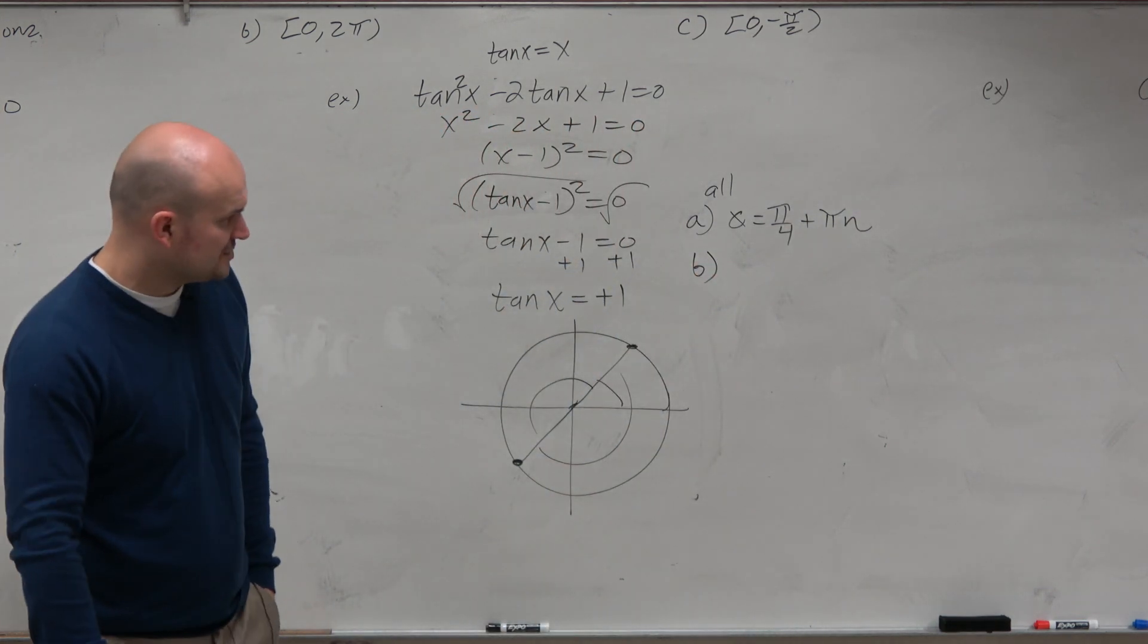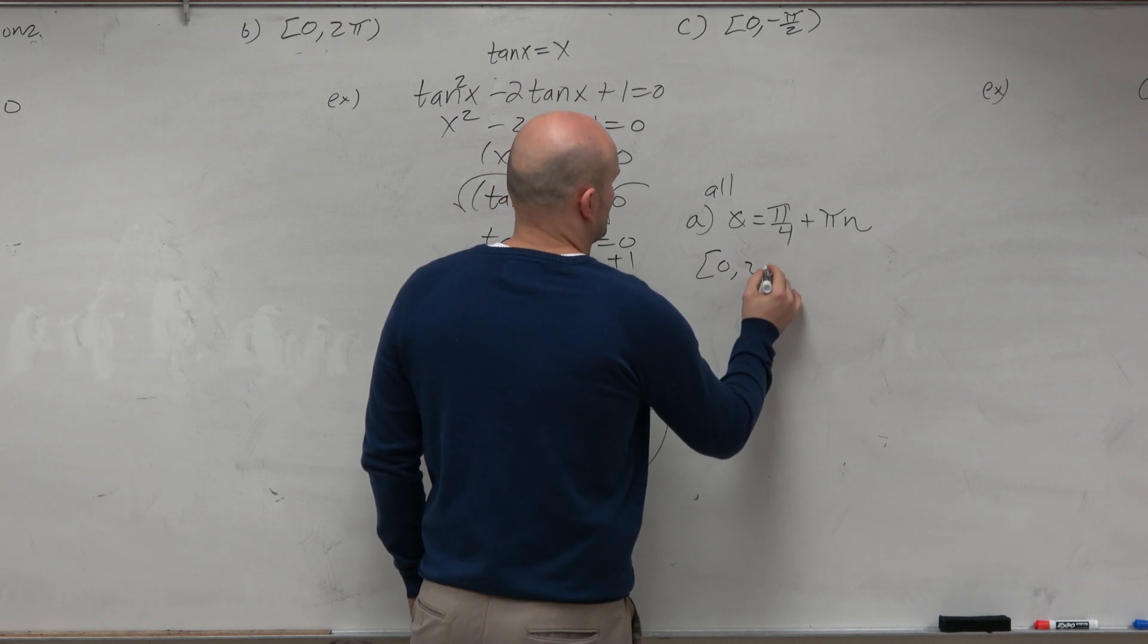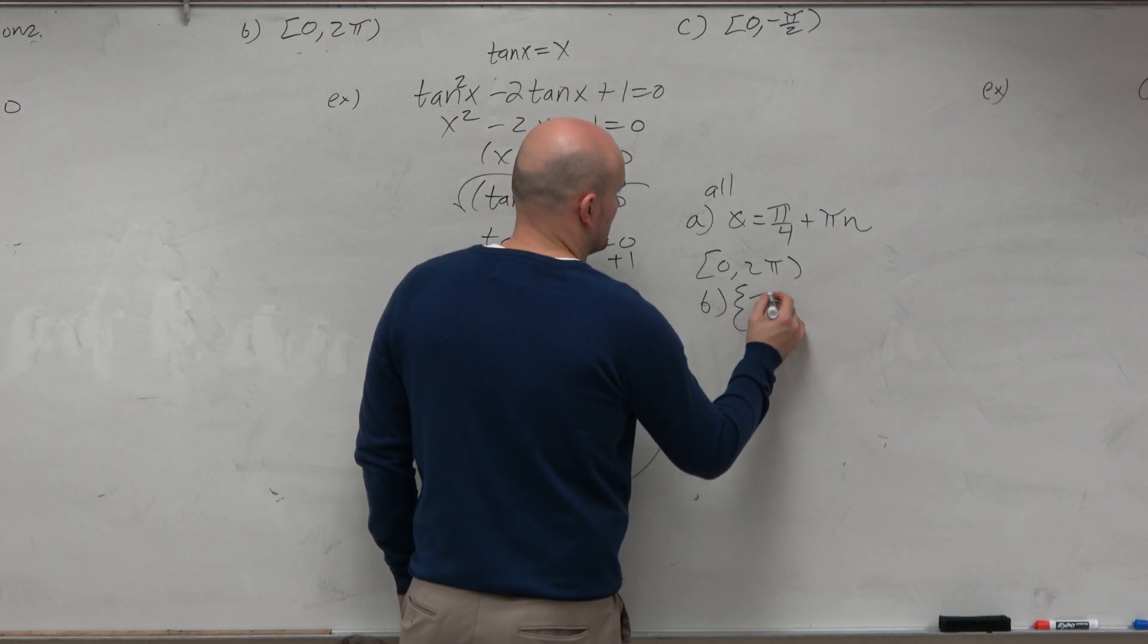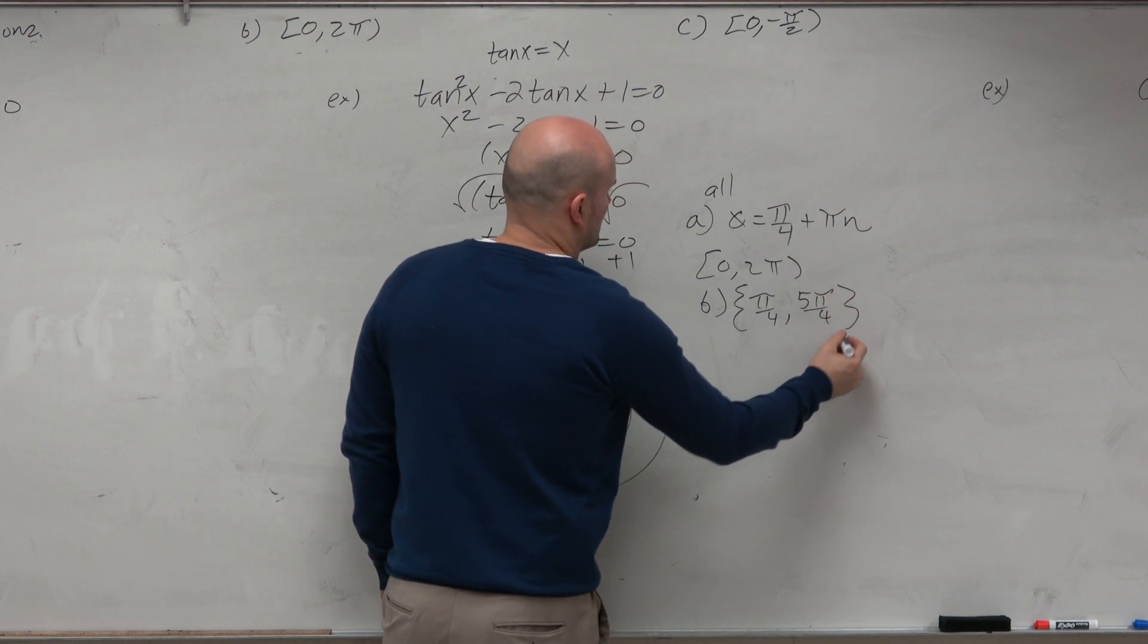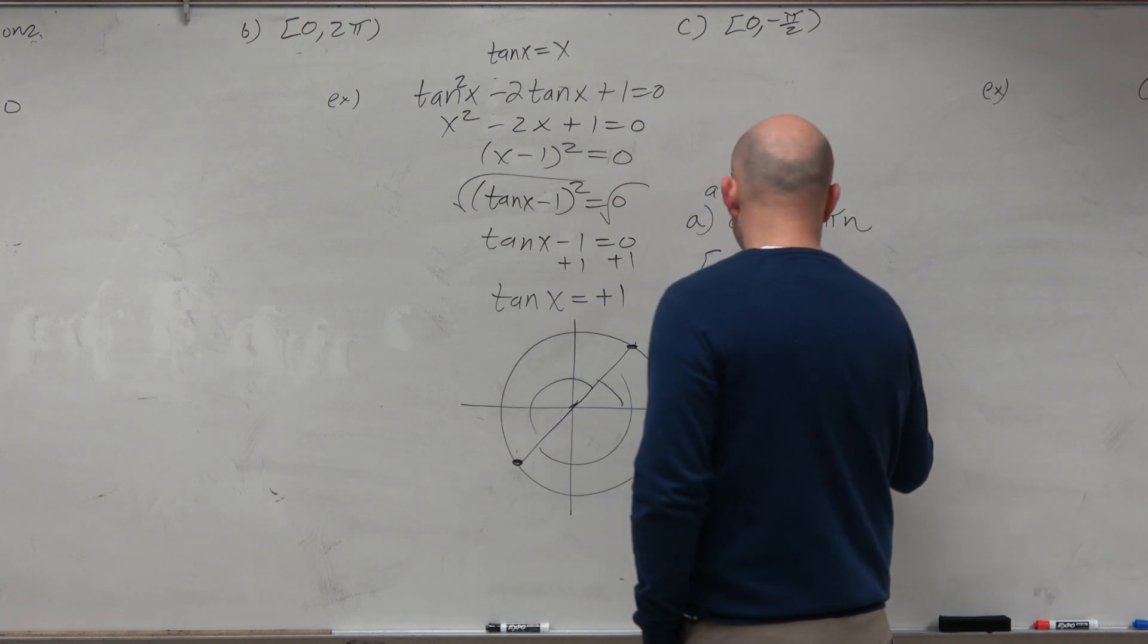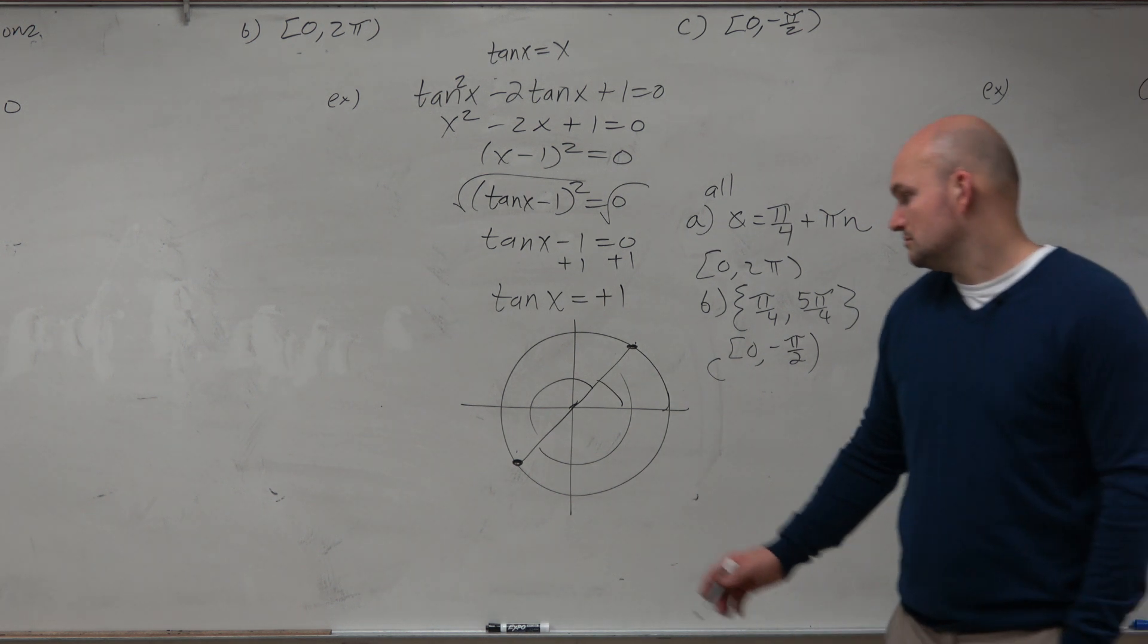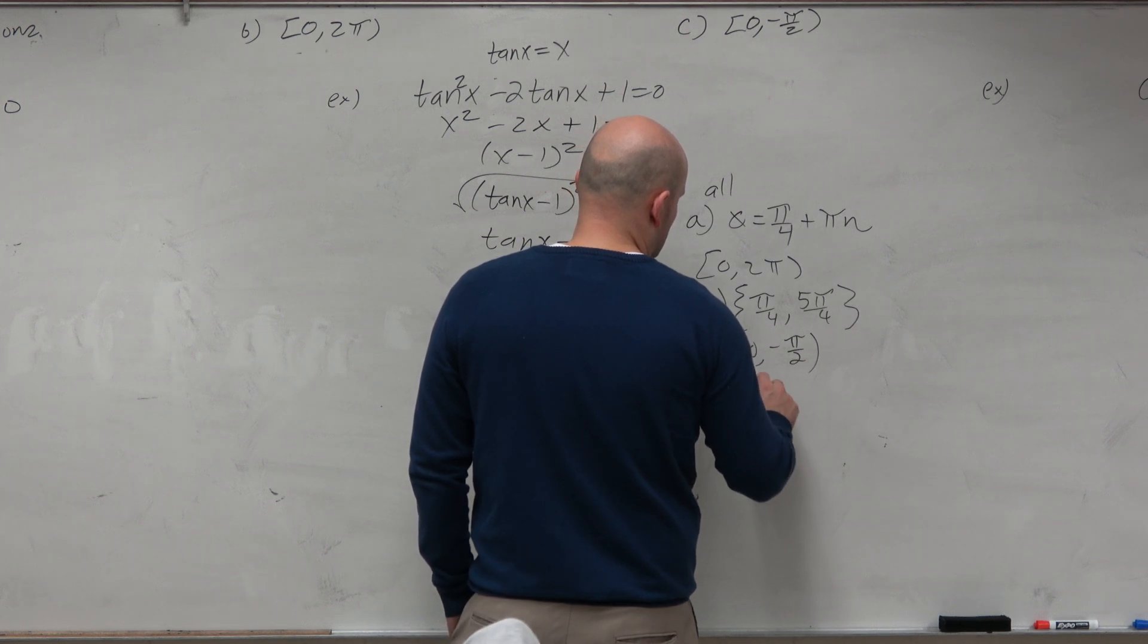B is finding all the answers between 0 and 2 pi. So for B, that's going to be pi over 4 and this angle, which is 5 pi over 4. And then C, which is find all the answers between 0 and negative pi halves. You guys can see there is not a solution that is in the fourth quadrant, right? So it does not exist. Or are we going to say no solution?